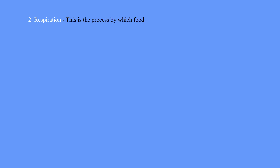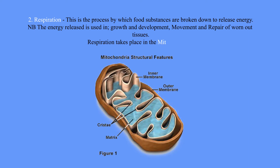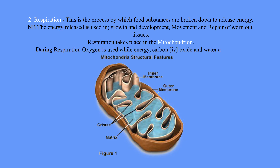Two: respiration. This is the process by which food substances are broken down to release energy. The energy released is used in growth and development, movement, and repair of worn-out tissues. Respiration takes place in the mitochondrion. During respiration, oxygen is used while energy, carbon dioxide, and water are released.